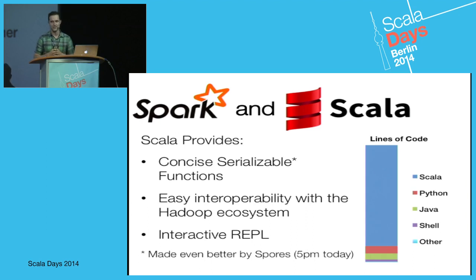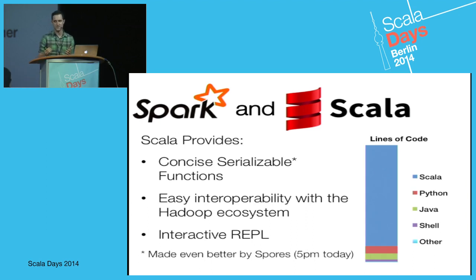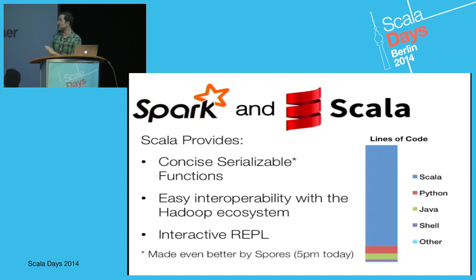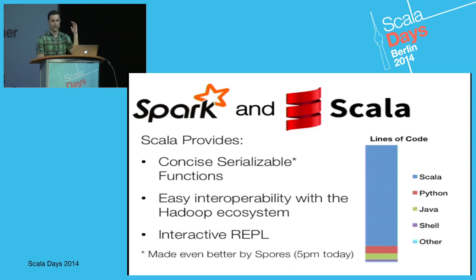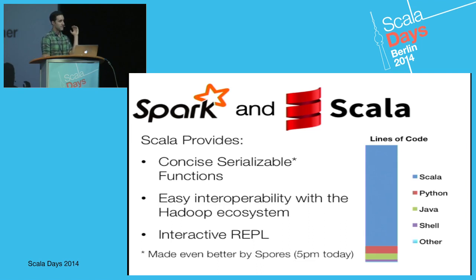One of the questions we get often is why we chose Scala. Most of our users come from the Java world and ask why Scala. I think the biggest reason is these concise serializable functions. Scala was one of the first languages to make this very easy to do, and it's key to the Spark abstraction — you don't have to write large classes with lots of boilerplate similar to a MapReduce job. Instead you just write functions which we can trivially serialize and ship out.